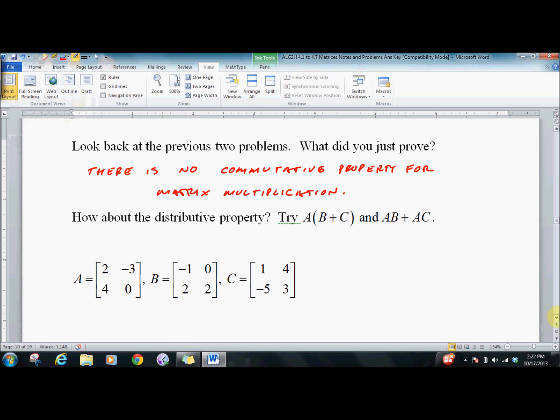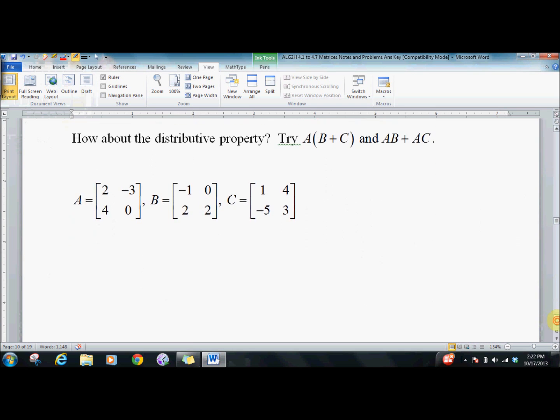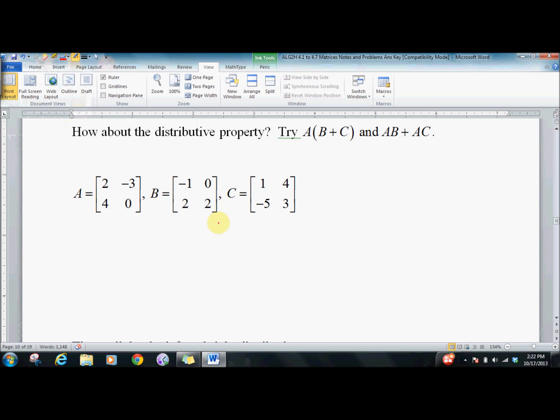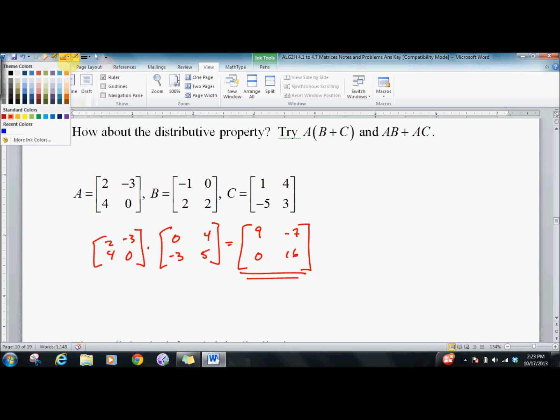How about the distributive property? Well let's try them both, see if it works. A times B plus C, we'll do A(B+C) first. Two, four times negative three, zero times zero, four, negative three, five. We'll get nine, negative seven, zero, sixteen.